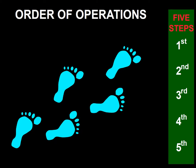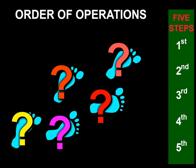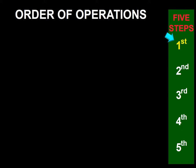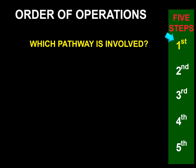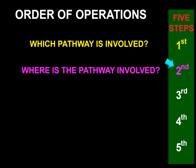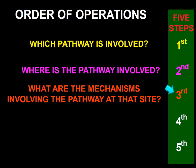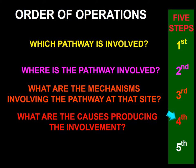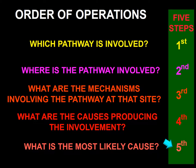I organize the Neurological Order of Operations in five steps. I will initially introduce these steps in the form of five simple questions. The first question is: which pathway is involved? The second question is: where is the pathway involved? The third question is: what are the mechanisms involving the pathway at the selected site? The fourth question is: what are the causes producing the involvement? And the fifth and final question is: what is the most likely cause of the neurological finding?